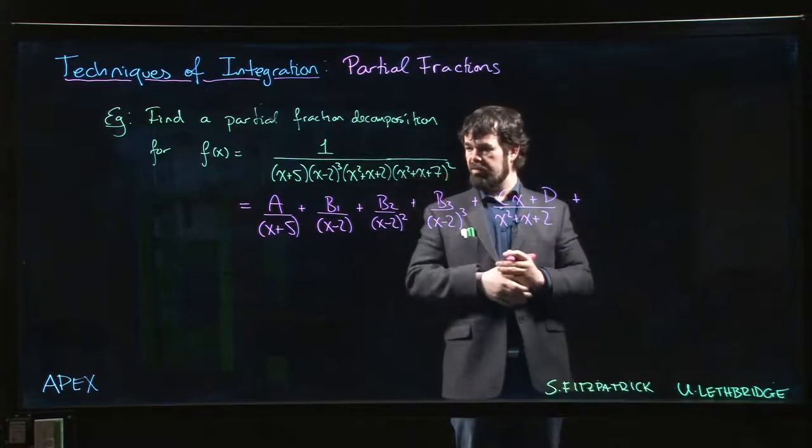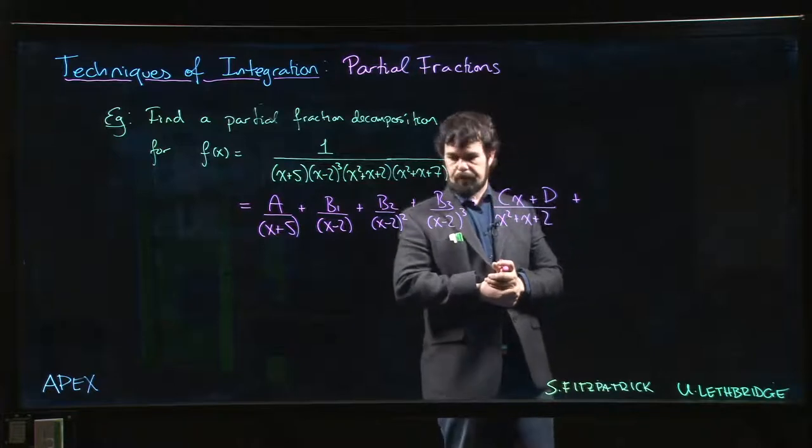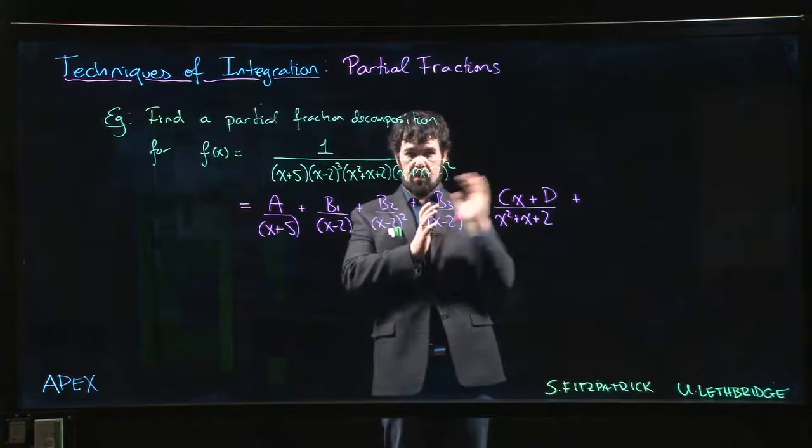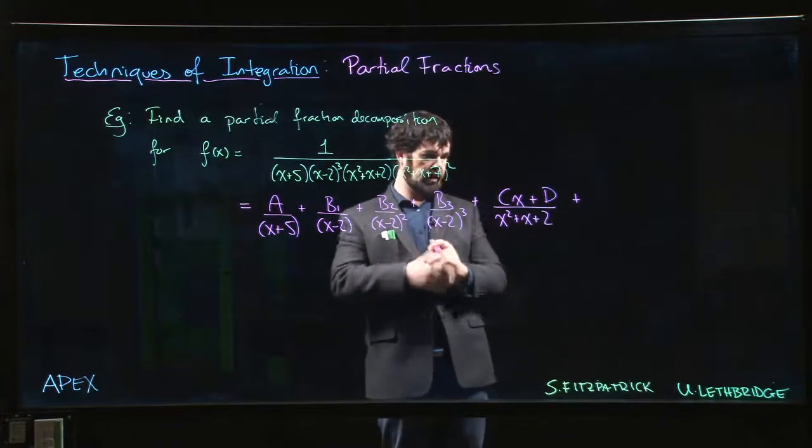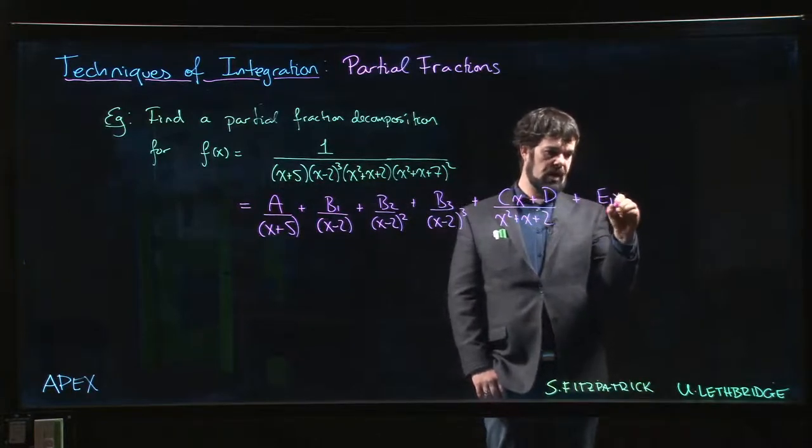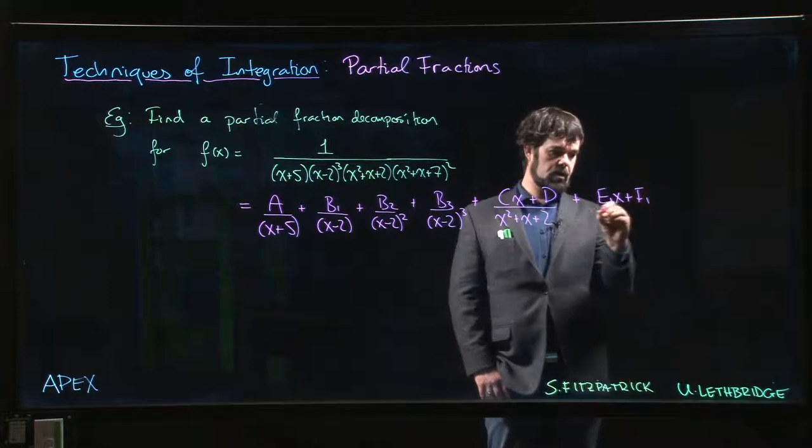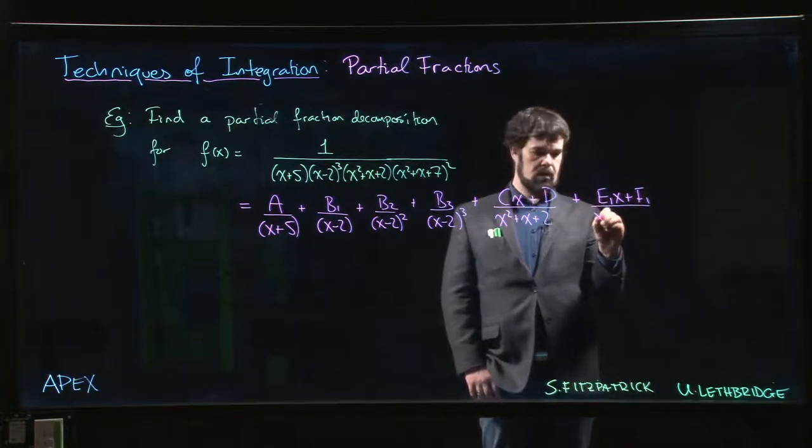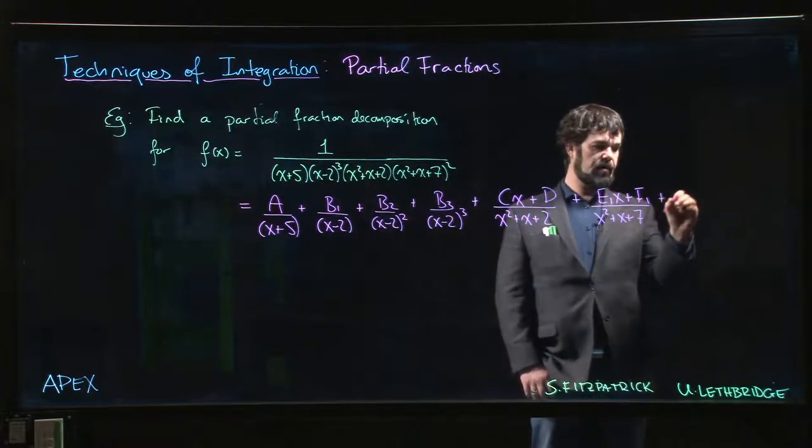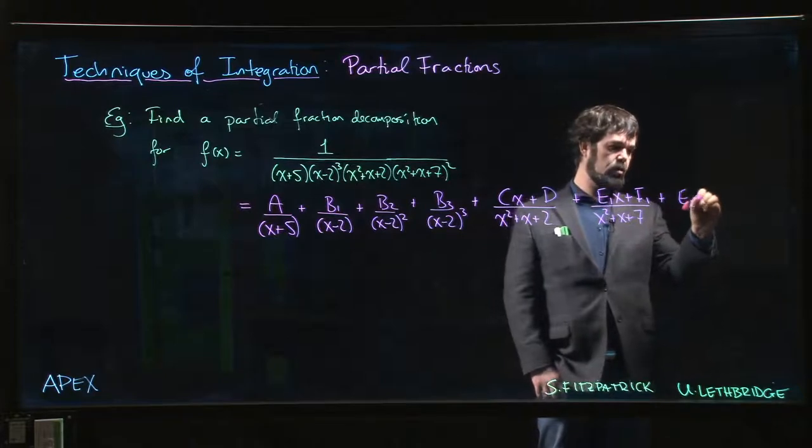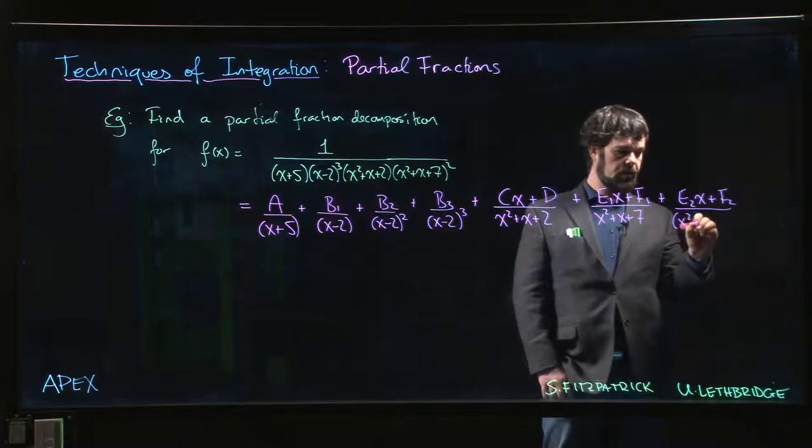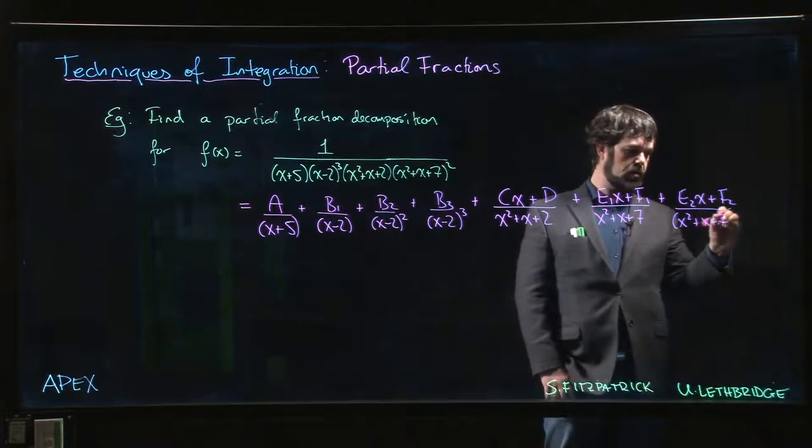And then finally we have a repeated quadratic factor. If you have a repeated quadratic factor, then you need to have two terms—one for that factor to the first power, one for the square of that factor. So we might have something that looks like E1x plus F1 over x squared plus x plus 7, and we might have an E2x plus F2 over x squared plus x plus 7 squared.